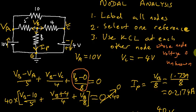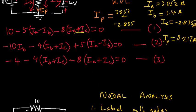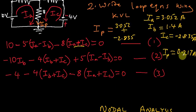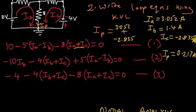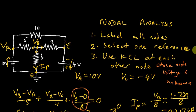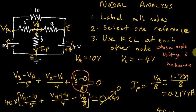Let's check. What do you get with mesh analysis? Same thing — 0.217 amperes. What do you get with branch current analysis? 0.2174. So we know we are correct. You should get the same answer with every single method.